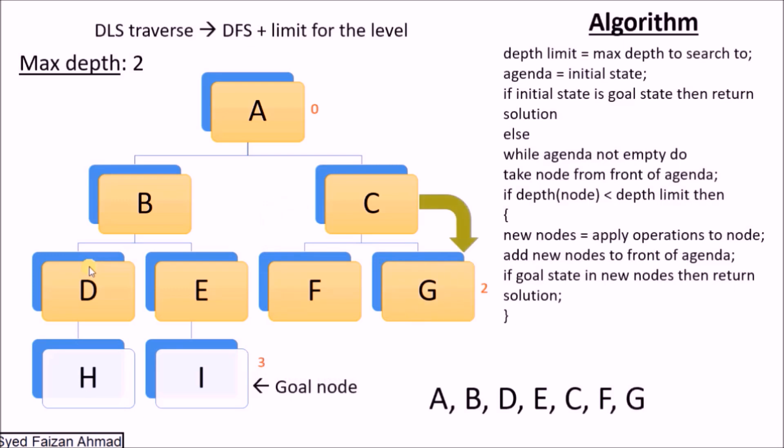You can see we traversed A, then B, then D, then backtracked to B and came to E, then backtracked from E to B, backtracked from B to A, from A to C, from C to F, backtracked and then came to G.